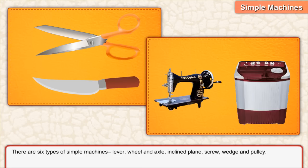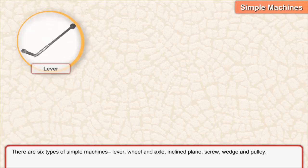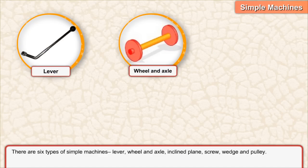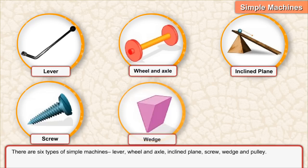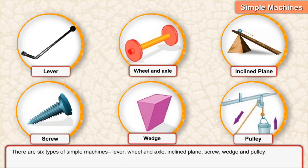There are six types of simple machines: lever, wheel and axle, inclined plane, screw, wedge, and pulley. Simple machines either change the direction of force applied or increase the force applied.